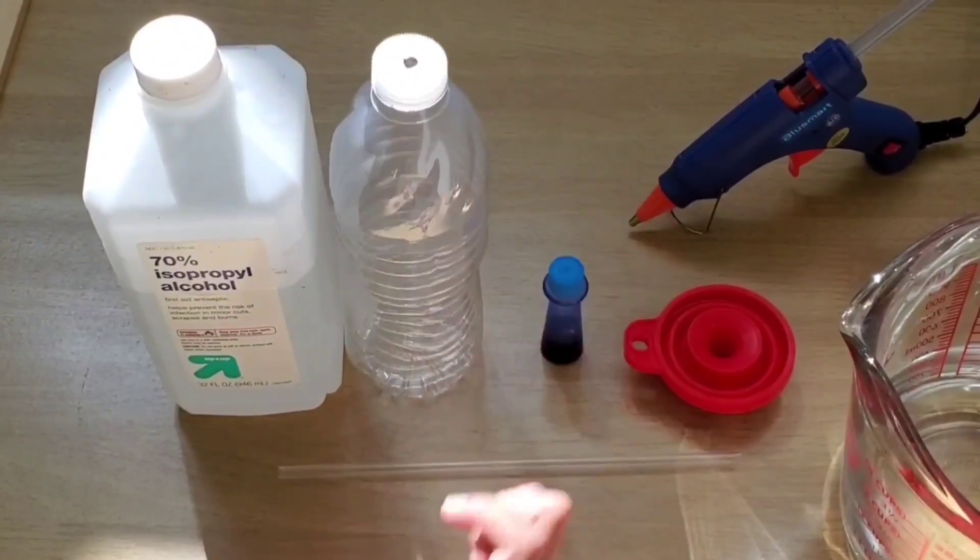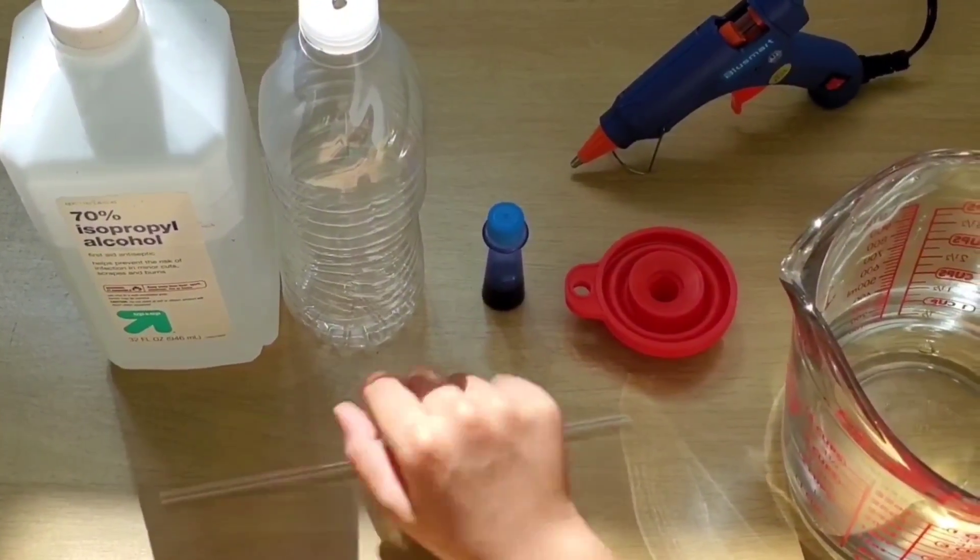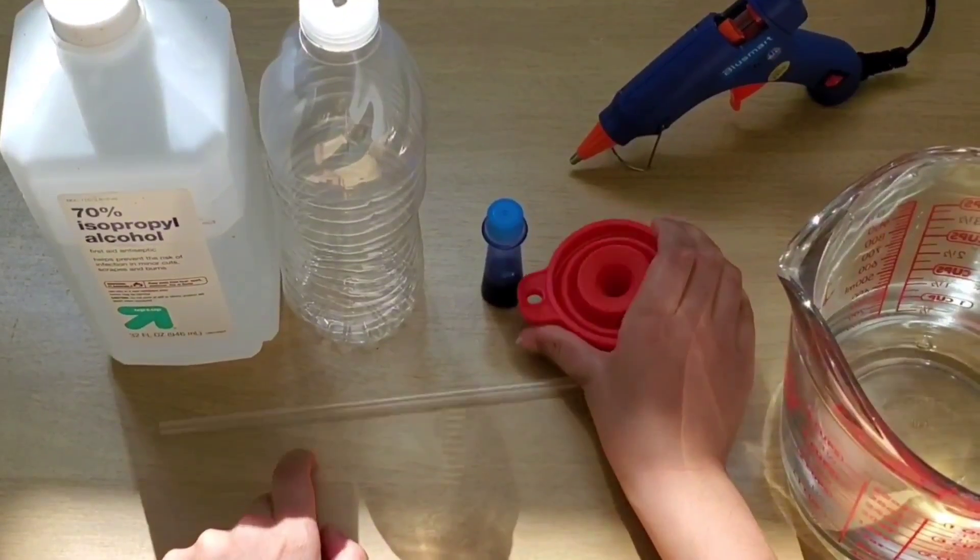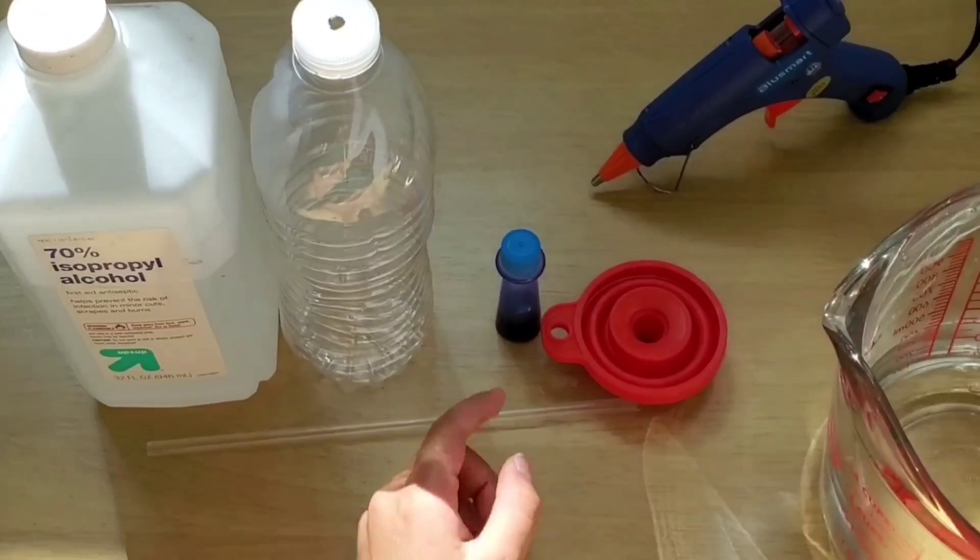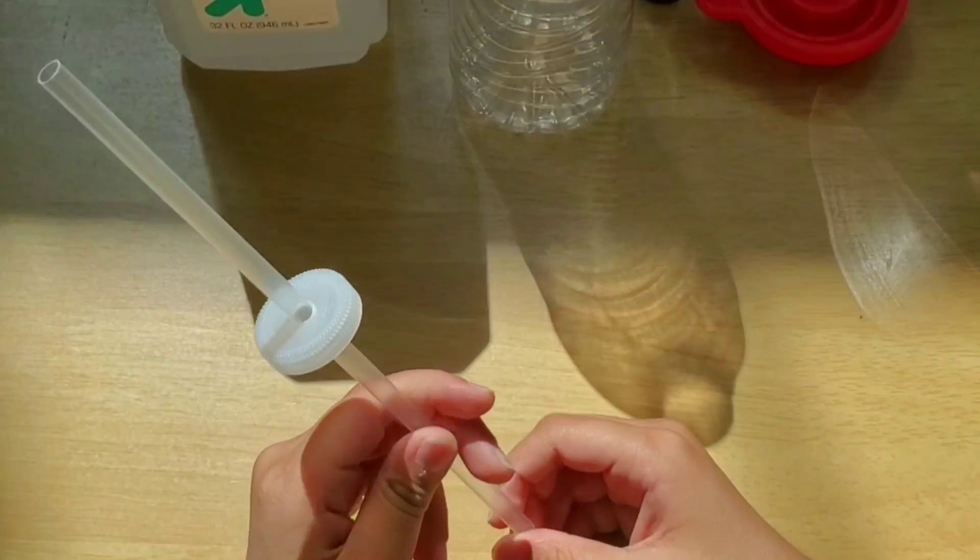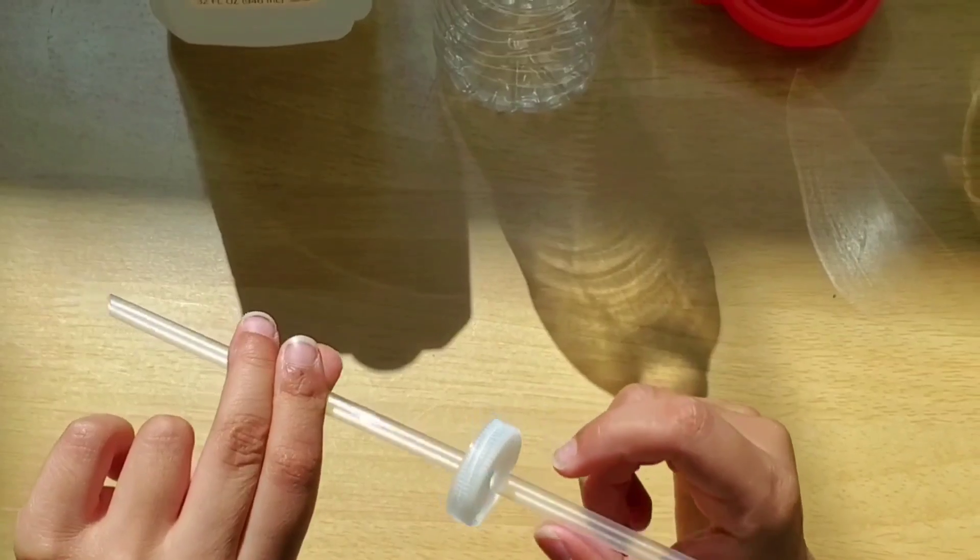We drilled it, and a transparent straw, and a funnel, and some water, and a hot glue gun. And we also need some food coloring. So the next step is to hot glue the straw on the bottle cap with the help of a parent.